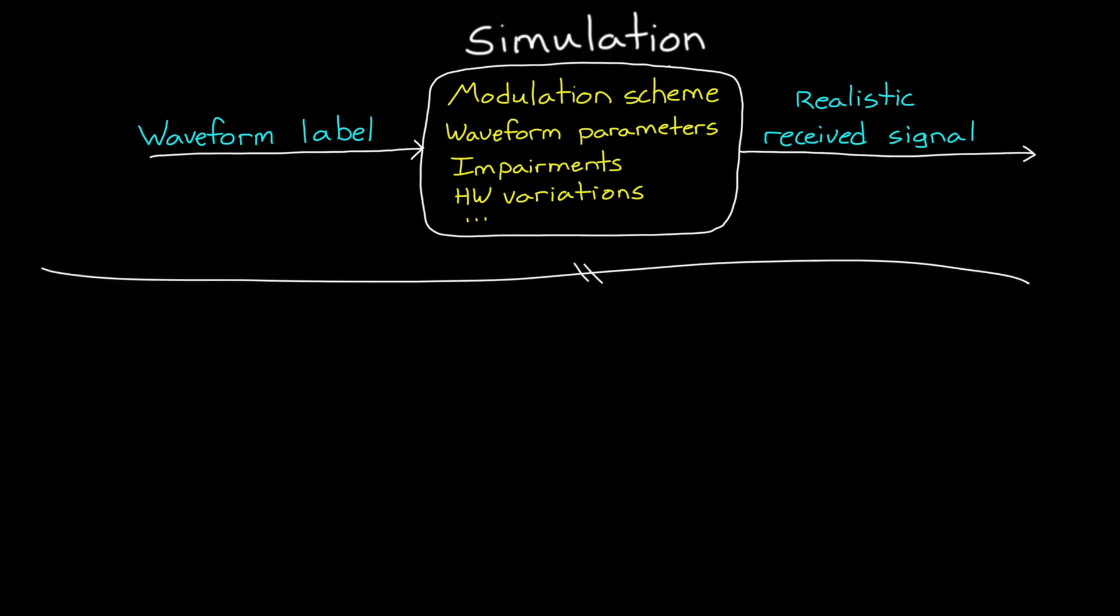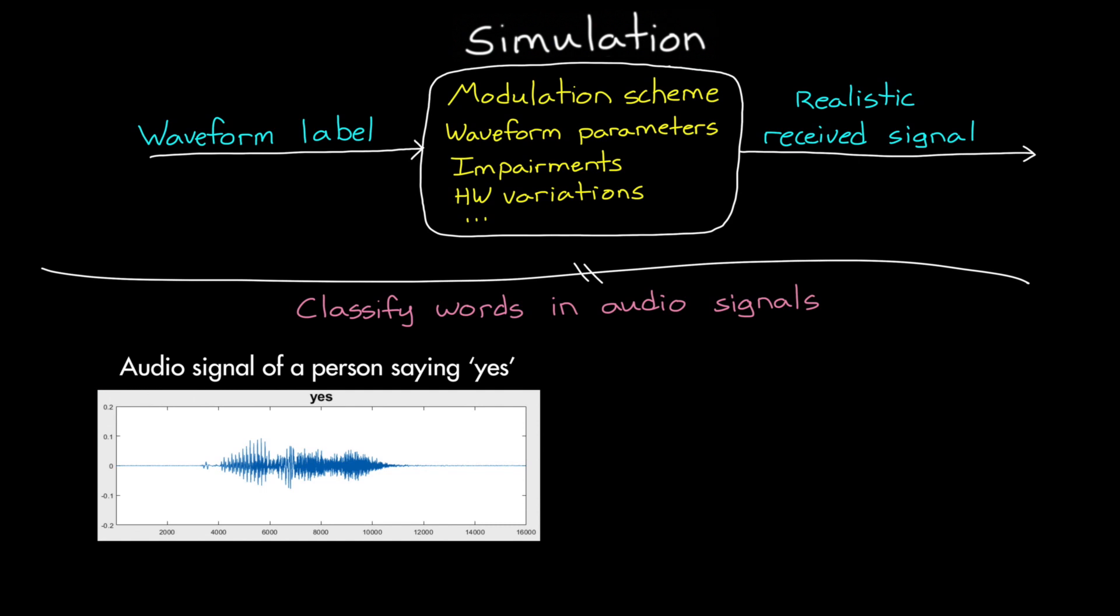Now, it's important to understand, though, when simulating data makes sense and when it doesn't. Like, if you wanted to build a network that could classify words in audio signals, then simulating people saying words is probably much harder than just collecting a lot of real audio. But for this particular problem, where the physics are well understood, it makes sense to build a model and to generate the data.